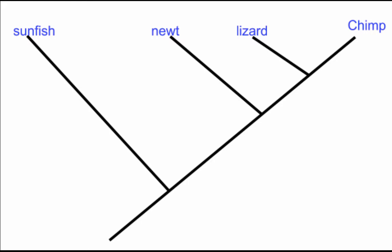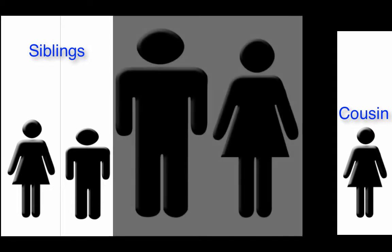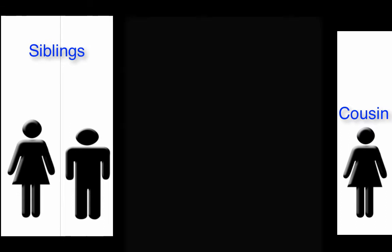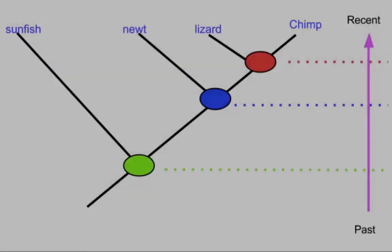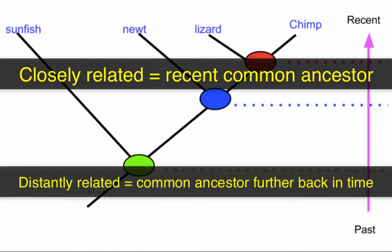So if you think about the chimp, lizard, newt, or sunfish — which organisms are more closely related to each other? If you have a sibling, who is your most recent common ancestor between you and your sibling? Looking back in time, the most recent common ancestor between you and your sibling are your parents. Now compare that to your most recent common ancestor between you and your cousin — that would be further back in time, your grandparents. We apply the same thinking to cladograms: you look for the most recent common ancestor and see how recent it is.